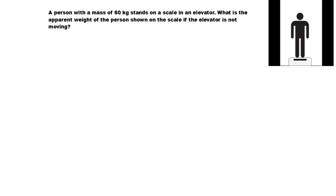Today we're going to look at a classic elevator problem with Newton's second law. This is a common problem given to physics students. A person stands on a scale in an elevator, and that person has a mass of 60 kilograms. We want to know what the apparent weight of the person is shown on the scale. The way a scale works is it actually measures the force that the scale has to exert back up on you to support you — we call that the normal force. So the normal force is the apparent weight, W_A.